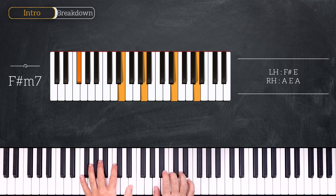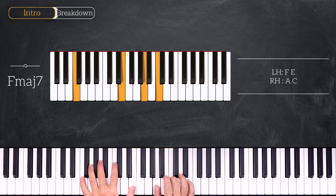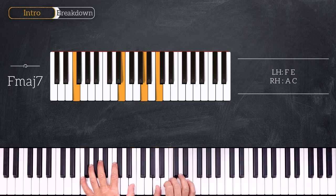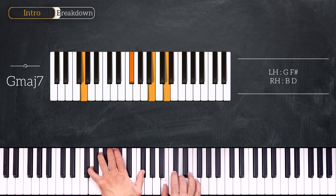Then we'll play F major 7. That gives us F E on the left and A C on the right. Then we take all the notes up one step. And that gives us G major 7. G F sharp on the left hand and B D on the right.